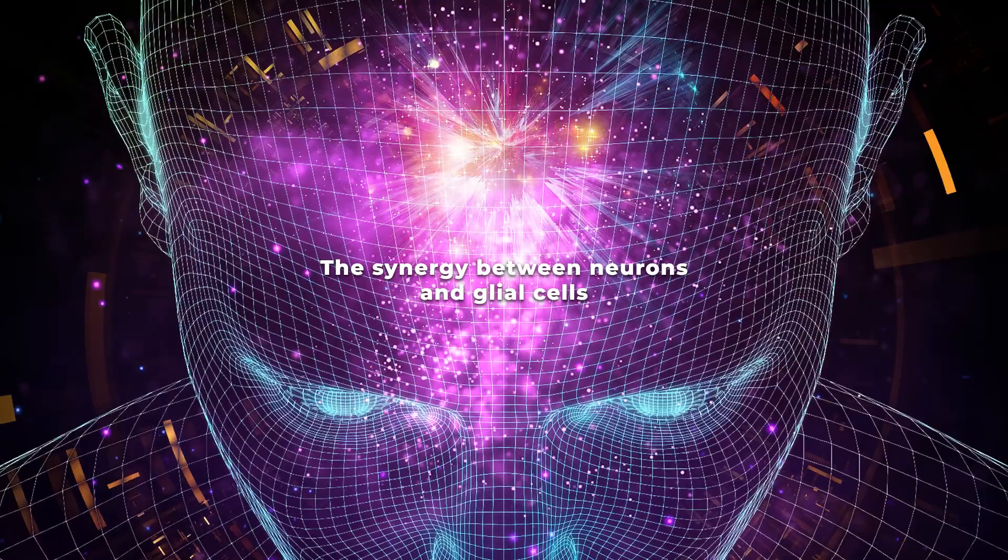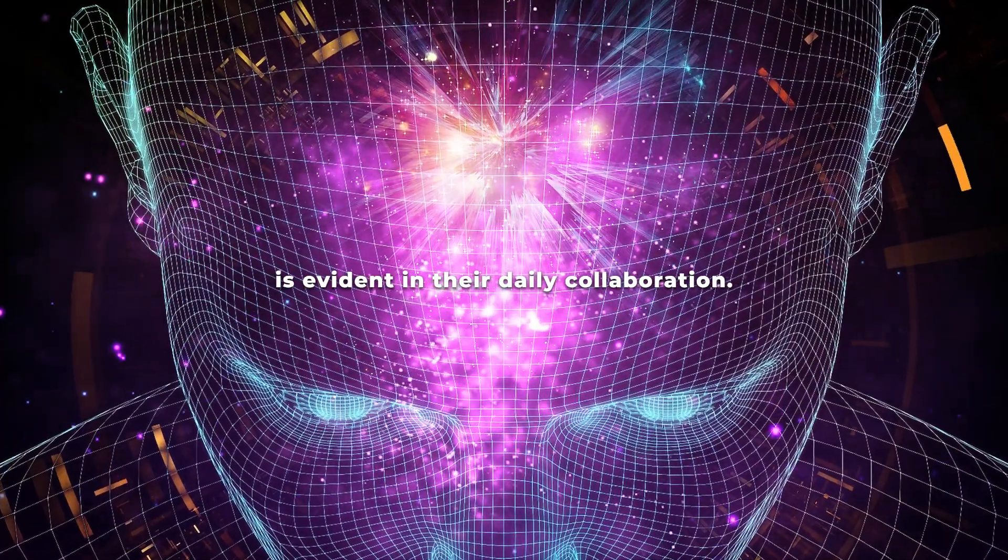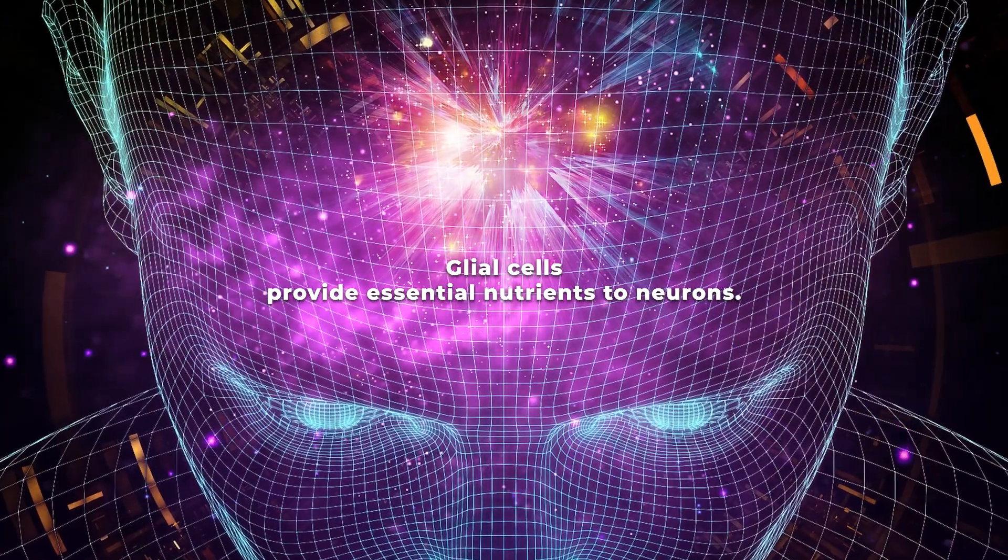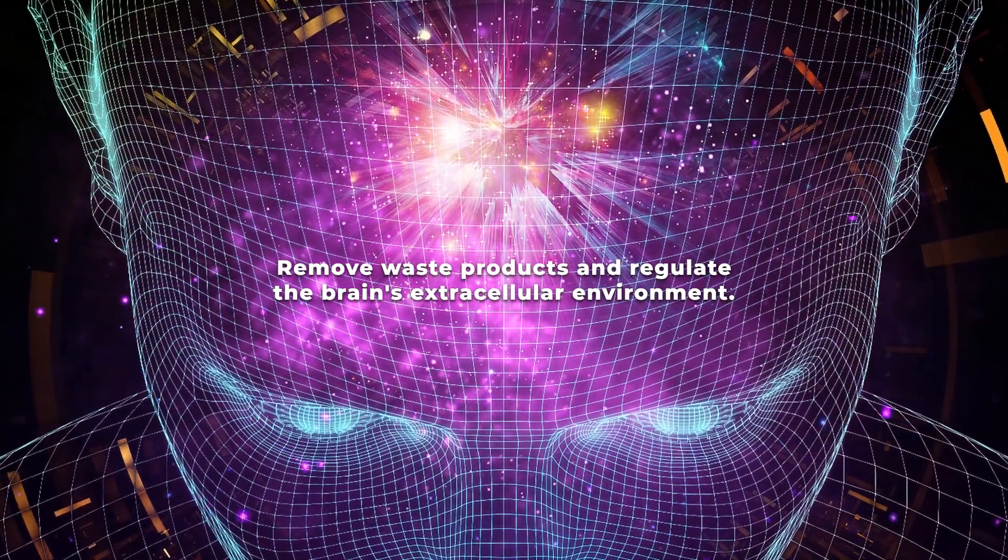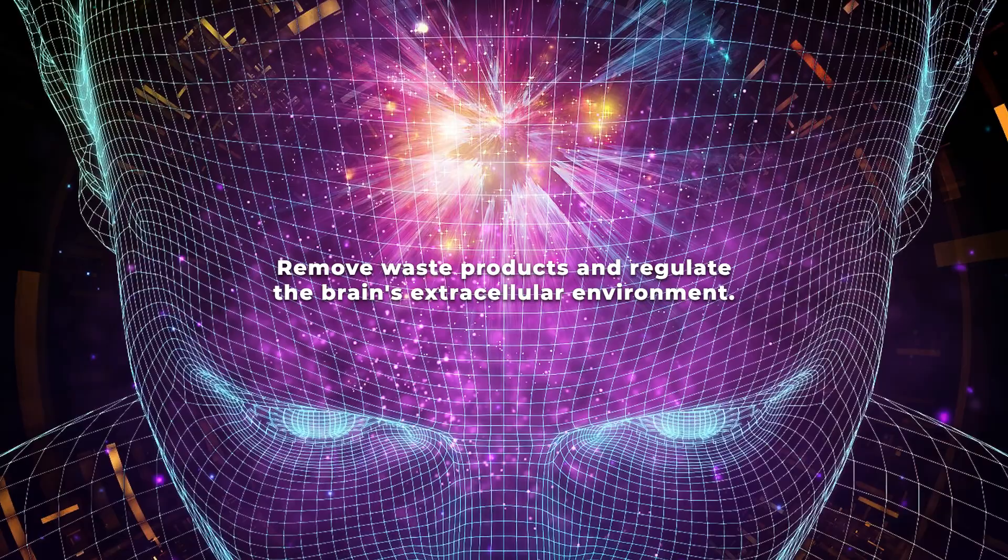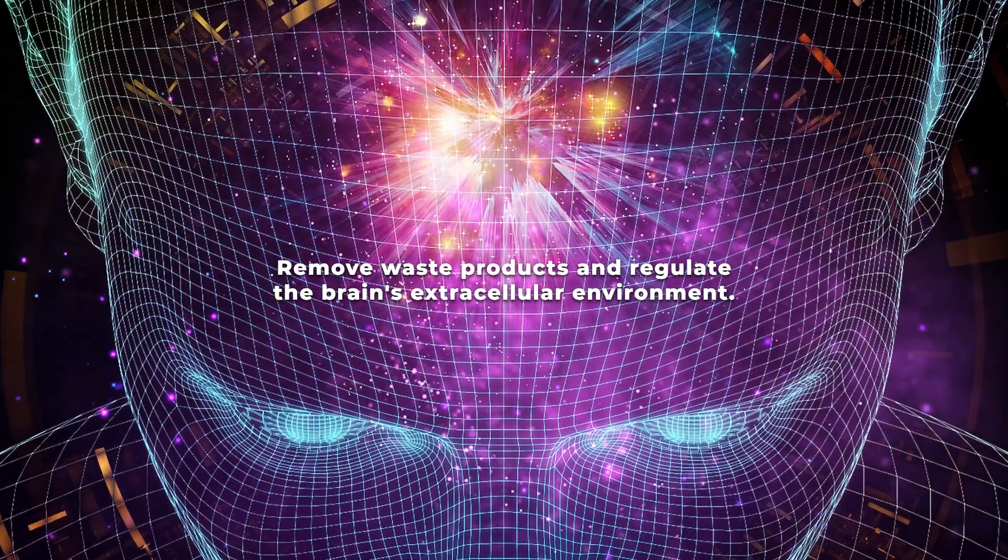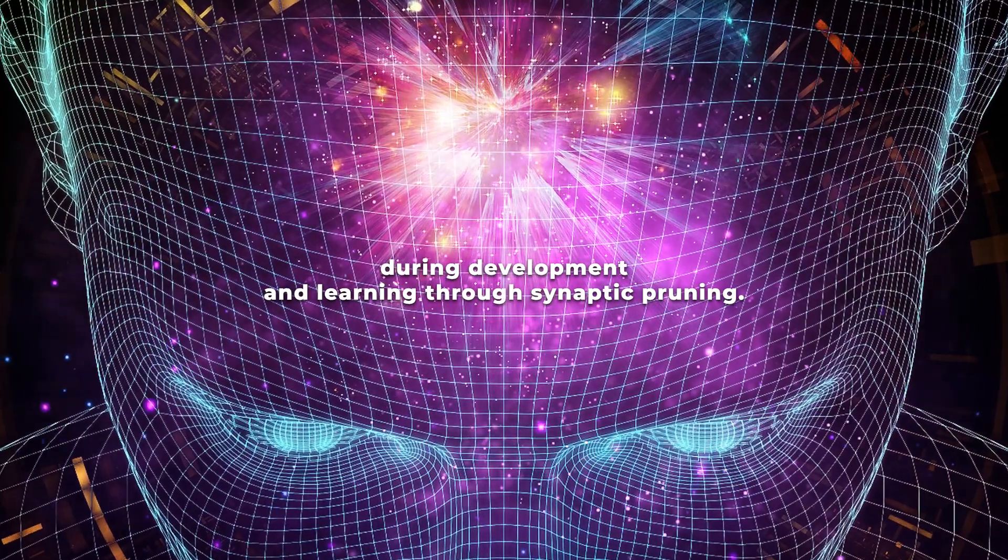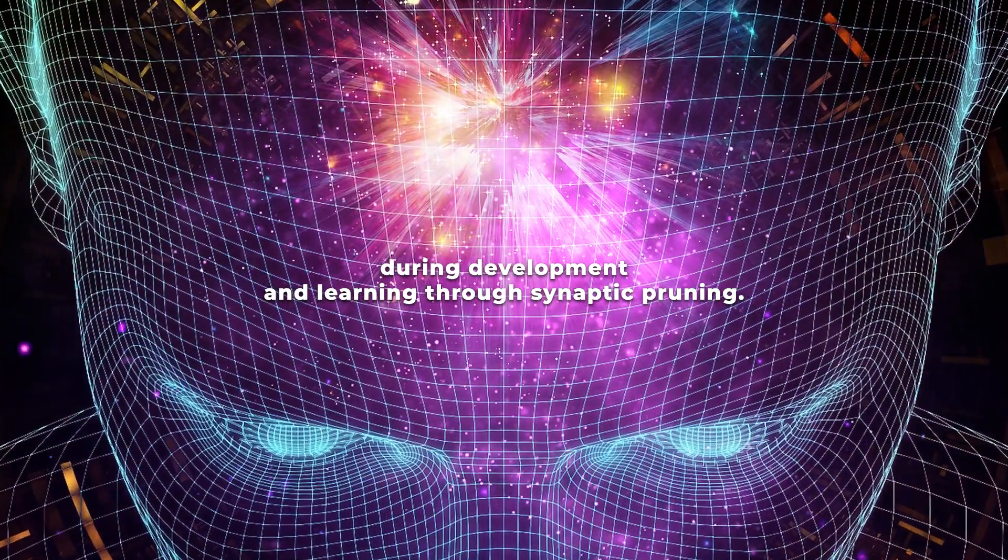The synergy between neurons and glial cells is evident in their daily collaboration. Glial cells provide essential nutrients to neurons, remove waste products, and regulate the brain's extracellular environment. In addition, they help refine connections between neurons during development and learning through synaptic pruning.